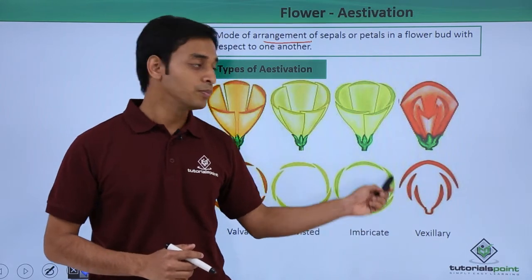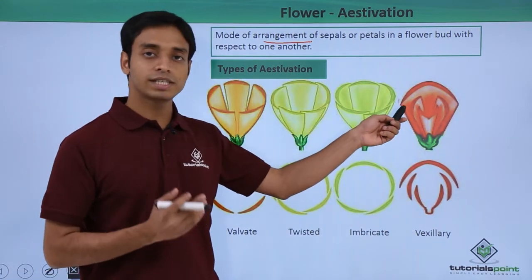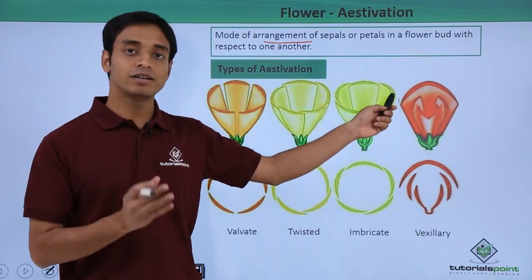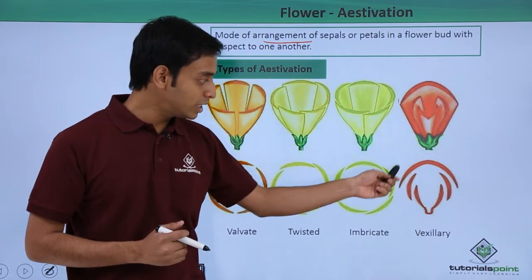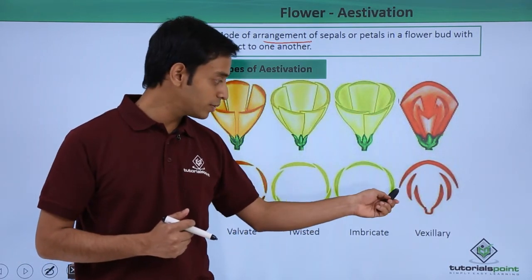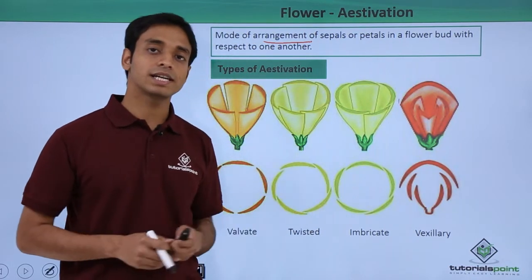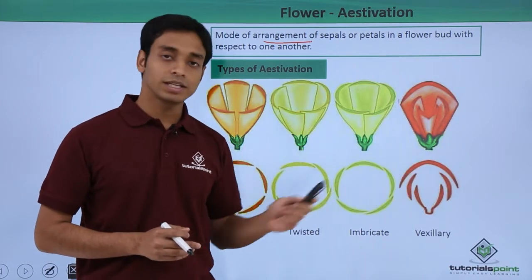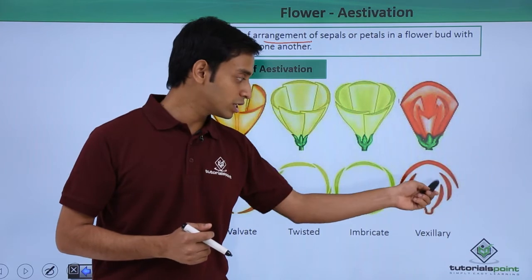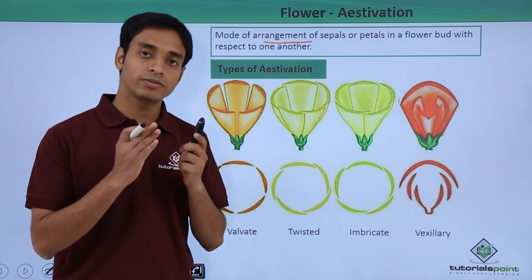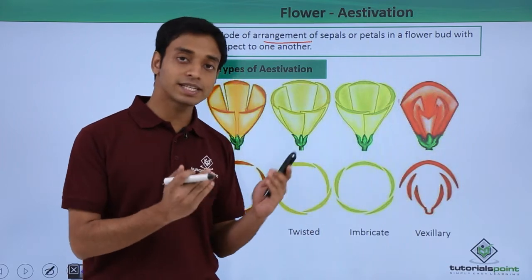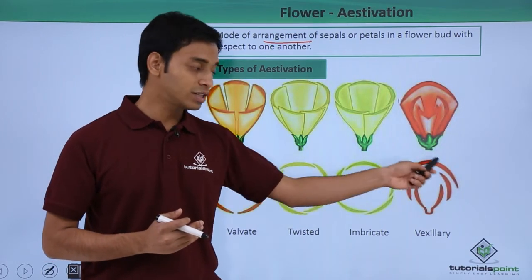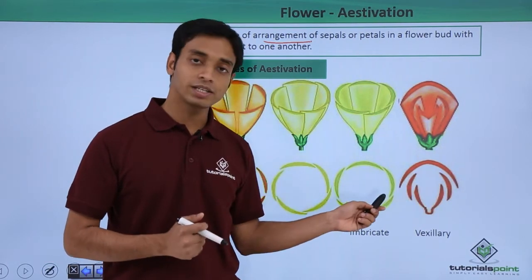The last type is the vexillary type of aestivation, mostly seen in flowers with five petals. The largest petal, known as the standard petal, overlaps all other four petals and is located in the posterior part of the flower. The second largest petals are known as wings; they remain free from each other, not fused, and are overlapped by the standard petal.